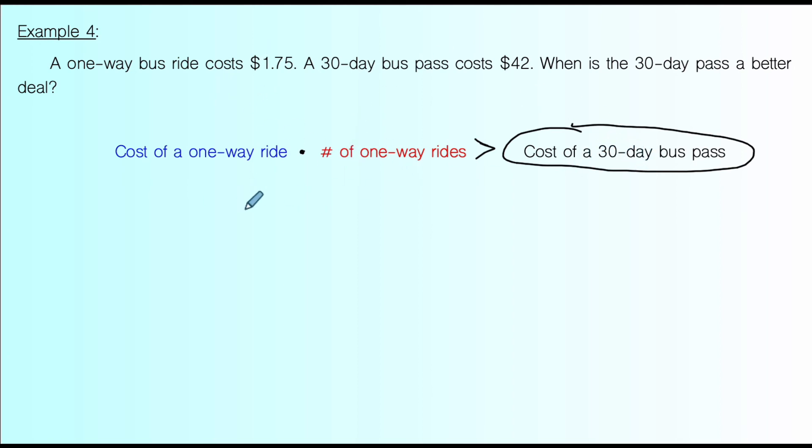So let's write what we know in words. We know the cost of a one-way ride is $1.75. And we're asking ourselves, how many rides is it going to take for this to cost more than this? We don't know the number of rides. That's what we're going to find. So that's our variable. And then we know the cost of a 30-day bus pass is $42. So $1.75x. When is $1.75 times some number of rides going to be costing more than $42? That'll tell us our magic number, the number of rides it's going to take for the bus pass to be a better deal.